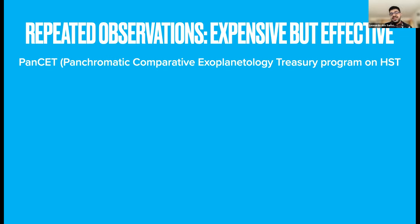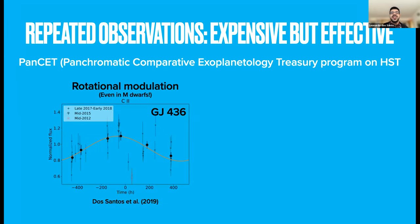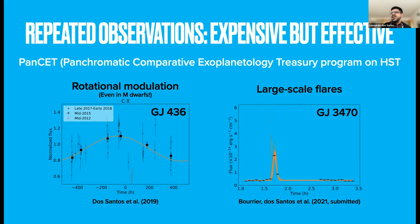When you do this approach, you can start finding all kinds of things happening in your star. For instance, you can detect rotational modulation in the far ultraviolet, even for M dwarfs as inactive as GJ436. Since the rotational period of GJ436 is 40 days, you need a relatively good baseline for that. On short timescales, you can also detect large-scale flares that increase your UV fluxes by a factor of 10, as in this class X flare in GJ3470, which is also an M dwarf that hosts a warm Neptune.